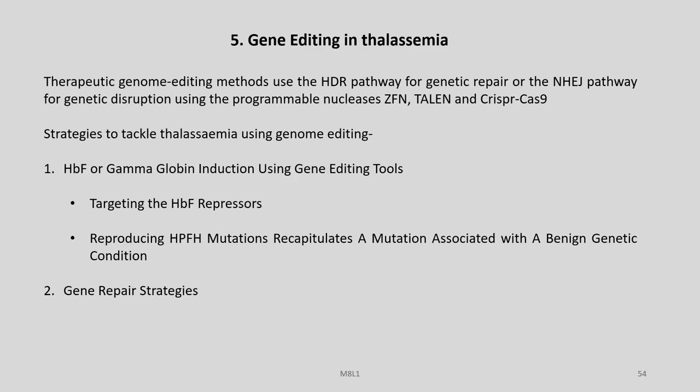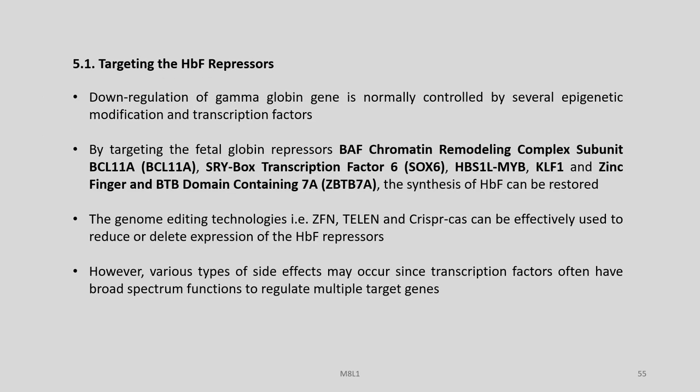Let us now discuss gene editing in thalassemia. Therapeutic genome editing methods use the HDR pathway for genetic repair or the NHEJ pathway for genetic disruption, using programmable nucleases like ZFN, TALEN, and CRISPR-Cas9. Some strategies to tackle thalassemia using genome editing include: first, HbF or gamma globin induction using gene editing tools targeting HbF repressors; second, reproducing HPFH mutations; and third, gene repair strategies.